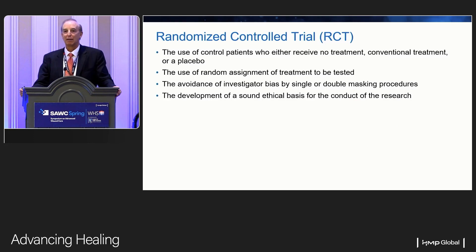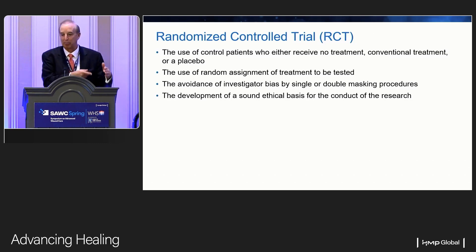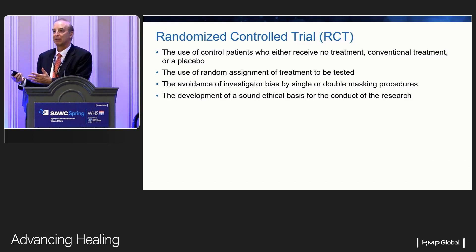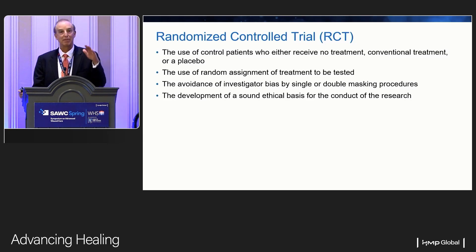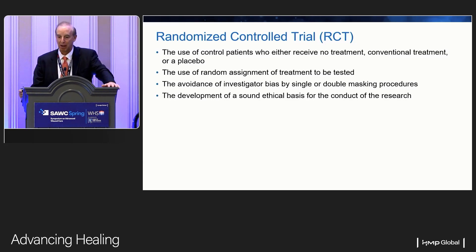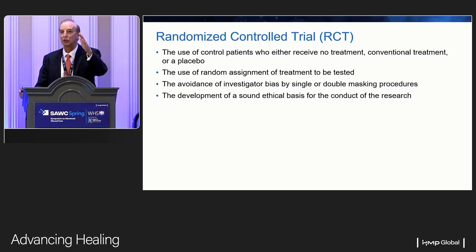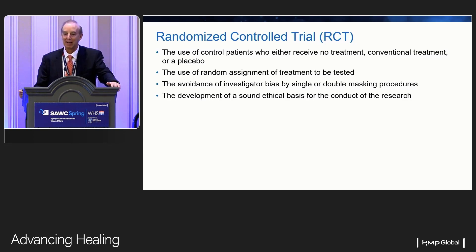In a randomized control trial, patients are randomized to receive no treatment, standard of care, or a placebo. It's a human experiment where well-done RCTs have one variable difference. Patients are randomly assigned to one group or another. Investigators are masked or blinded — sometimes single, sometimes double, sometimes even triple when the statistician is also blinded. The results of a well-done experiment are as reliable and believable as the quality of the experiment itself.